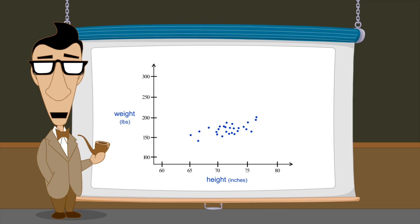But, if as height increased, weight decreased, height and weight would be negatively correlated.